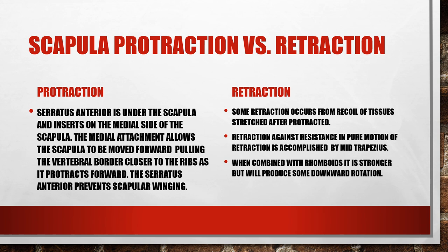Scapular protraction, also known as abduction of the scapula, is performed by the serratus anterior. Its fibers attach to the lower angle and the medial (vertebral) border of the scapula. This medial attachment allows the scapula to be moved forward, pulling the vertebral border closer to the ribs, hugging the ribs. Crucially, the serratus anterior prevents scapular winging.